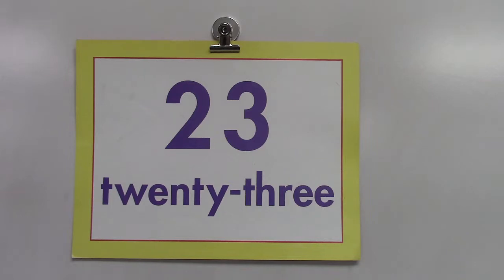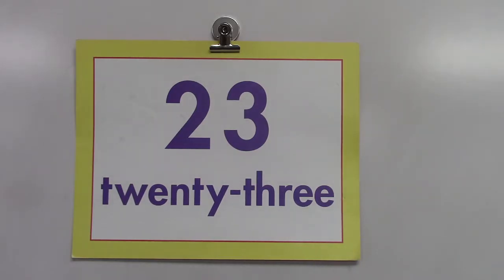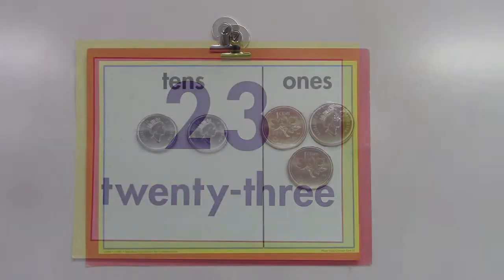Today is the 23rd of March, so we're going to look at the number 23. Is 23 even or odd? That's right — any number that ends with a three is an odd number. Did you notice that there is a hyphen in the middle of our number? The hyphen is connecting the word 'twenty' and the word 'three' to make one word: twenty-three. Sometimes we just push words right together and make them compound words.